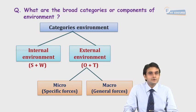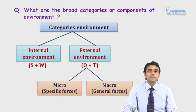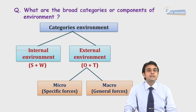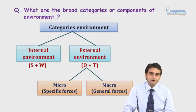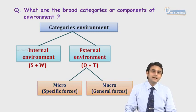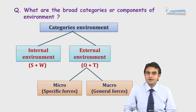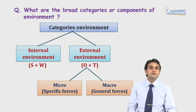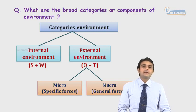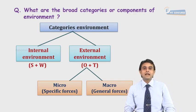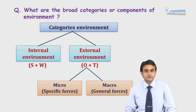A business can have control over its internal factors to some extent — for example, it can give training to its employees, build sound infrastructure, or raise more capital. But external factors are beyond the control of a business. They are uncontrollable factors, further classified into micro factors, which are the specific forces, and macro factors, which are the general forces.